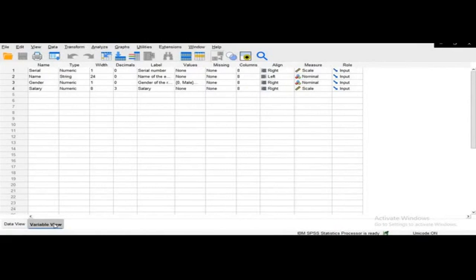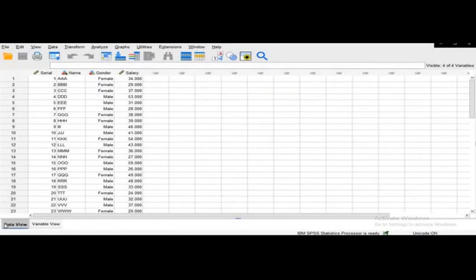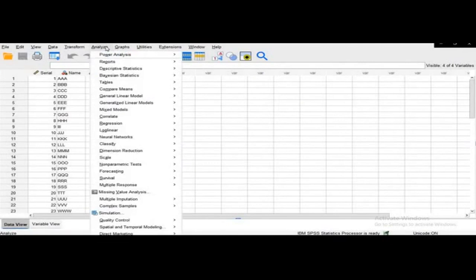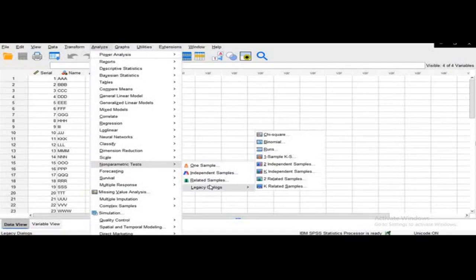To perform this test first we go to Analyze and select Non-Parametric Test and then go to Legacy Dialogues and then go to Two Independent Sample.